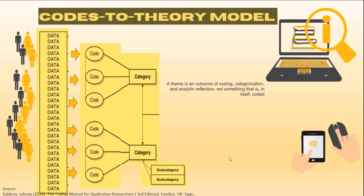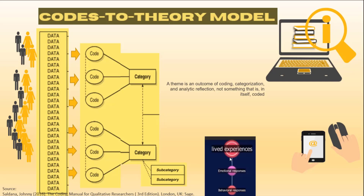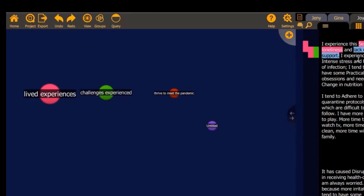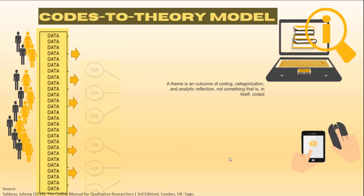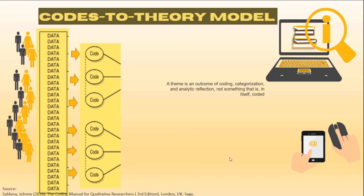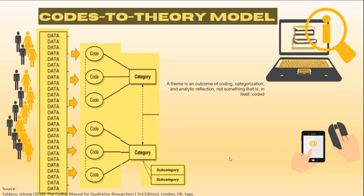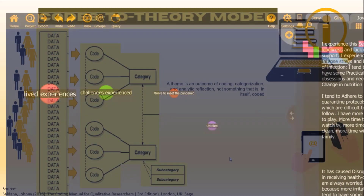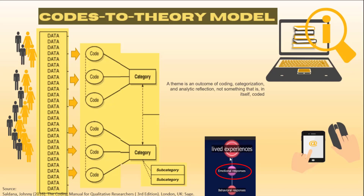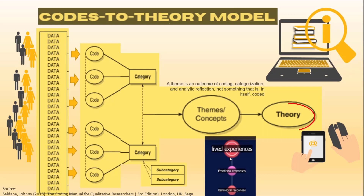In my previous video on Quirkos, I simply did the grouping based on the specific objectives of the study, then did the coding. According to Saldaña, after gathering the data we do the coding, then categorize them. For instance, in my previous video I categorized the lived experiences of pregnant women based on their emotional responses and behavioral responses. Once we are done with categorization, we then group them into themes, and finally we formulate our theory.